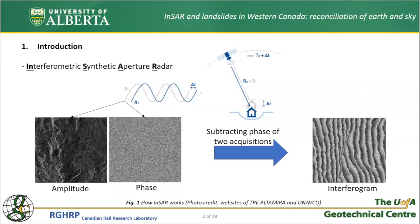InSAR stands for Interferometric Synthetic Aperture Radar, and the general idea behind its mechanism was originally inspired by regular radars used to track aircraft and ships through heavy weather and darkness. With the same theory, it can be used for monitoring the ground and tracking its displacements. Unlike telescopes or other optical tools that work in the visual spectrum of electromagnetic waves, SAR technology works in the microwave domain, and to avoid very long aperture sensors, radar experts devised a signal processing strategy to use a shorter one — that is why the term synthetic appears in the acronym.